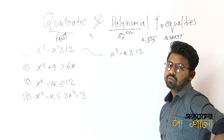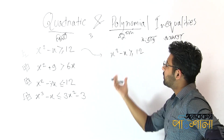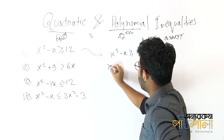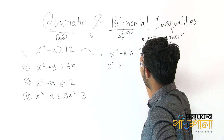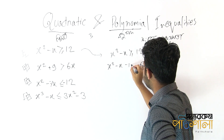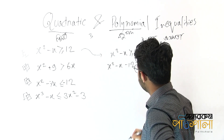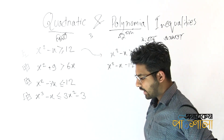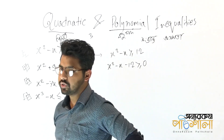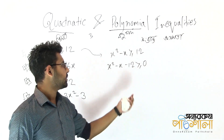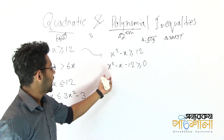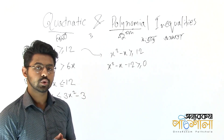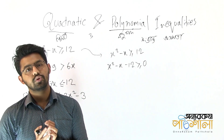We have x² - x ≥ 12. I will try to solve this problem. In this case, we have x² - x, and here I am going to rearrange to solve this problem, giving us x² - x - 12.